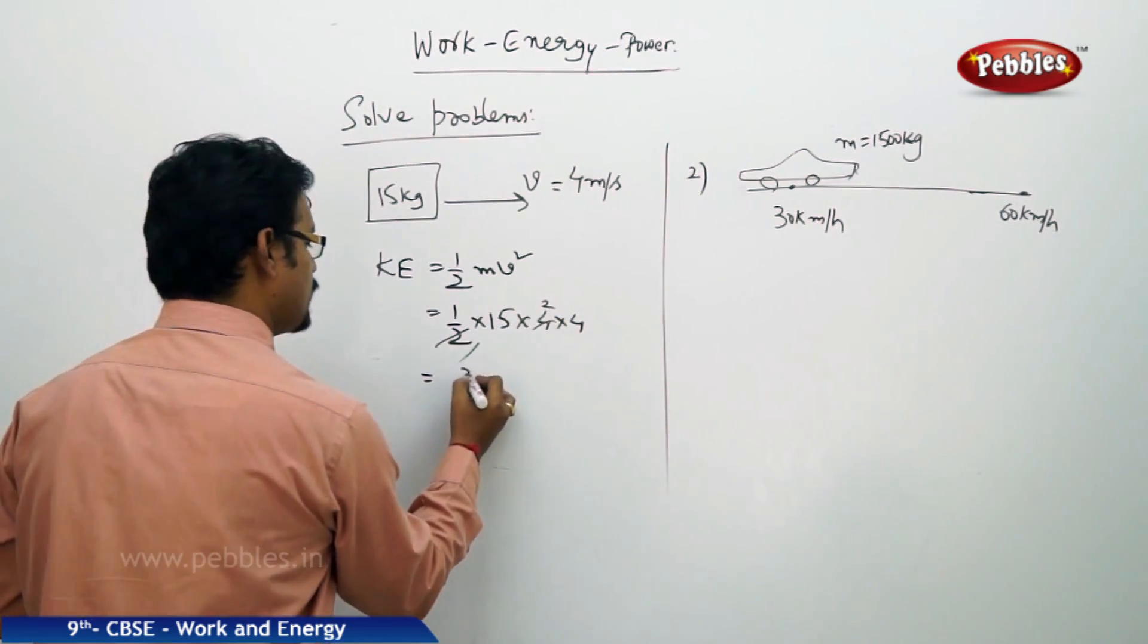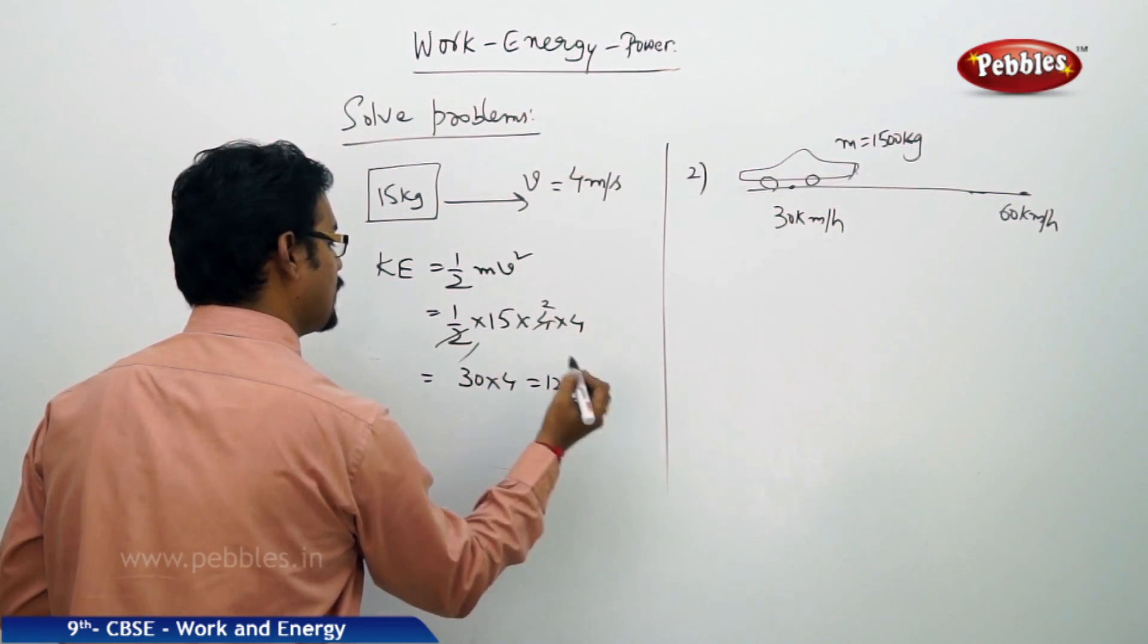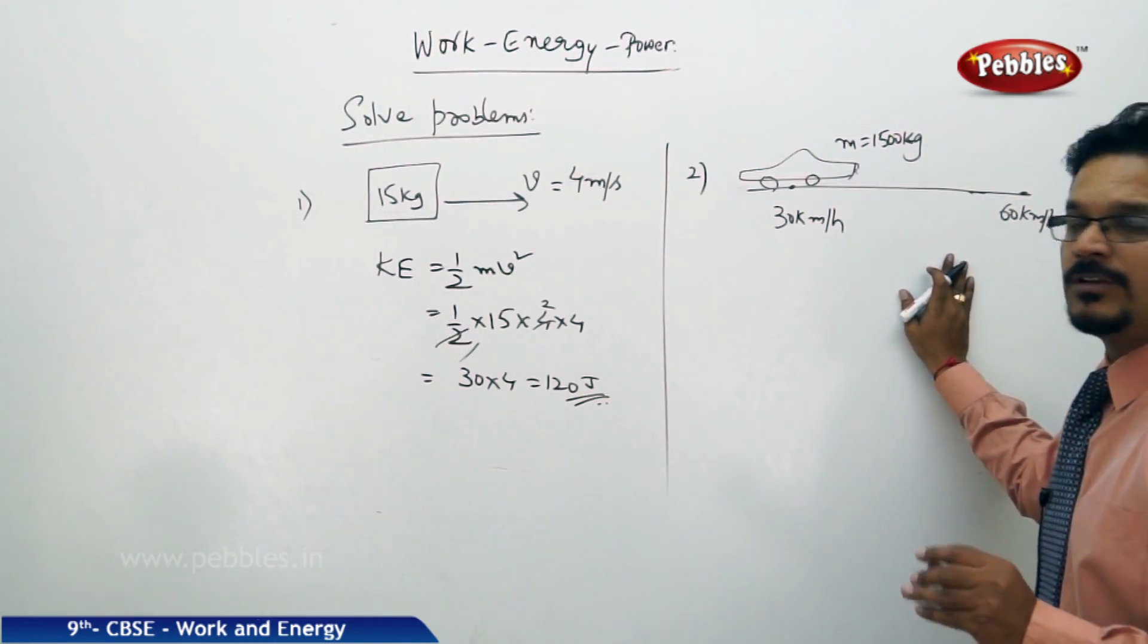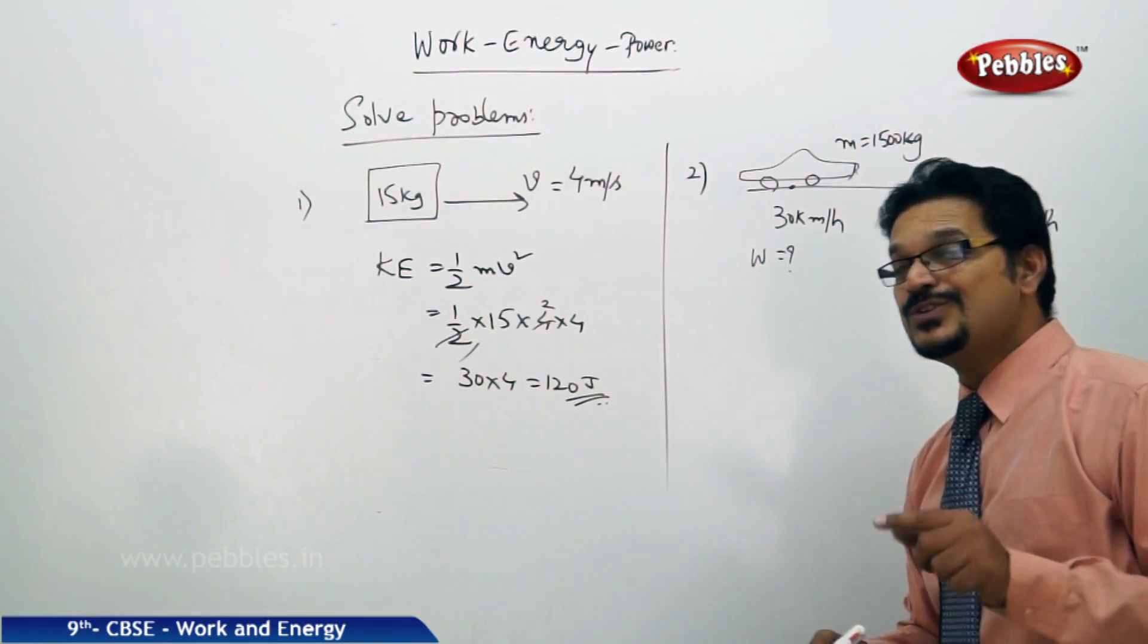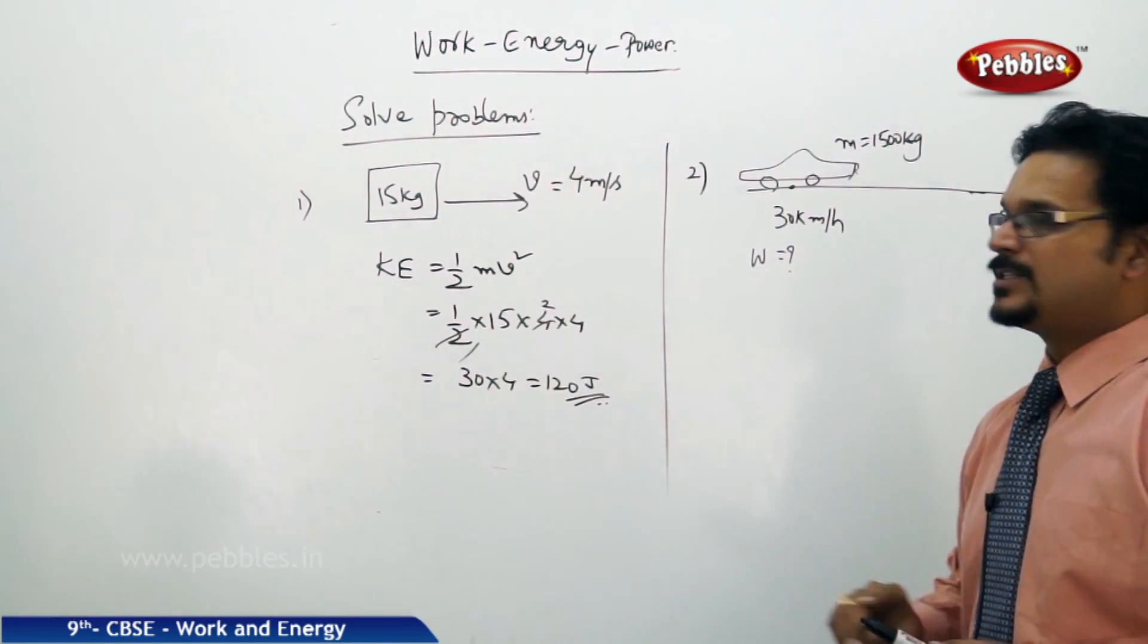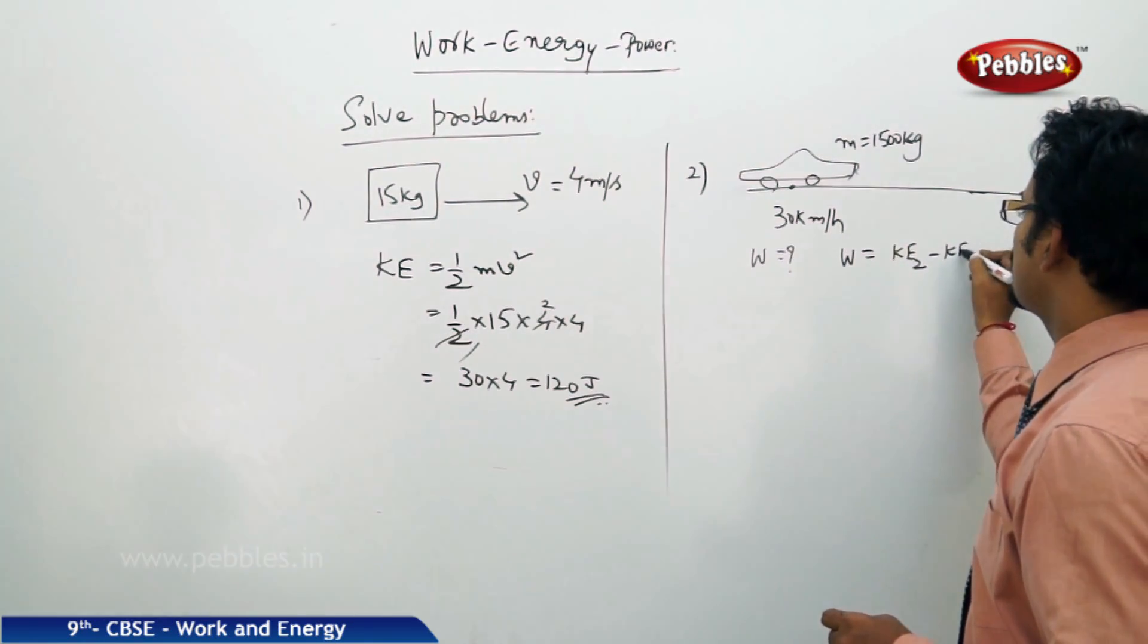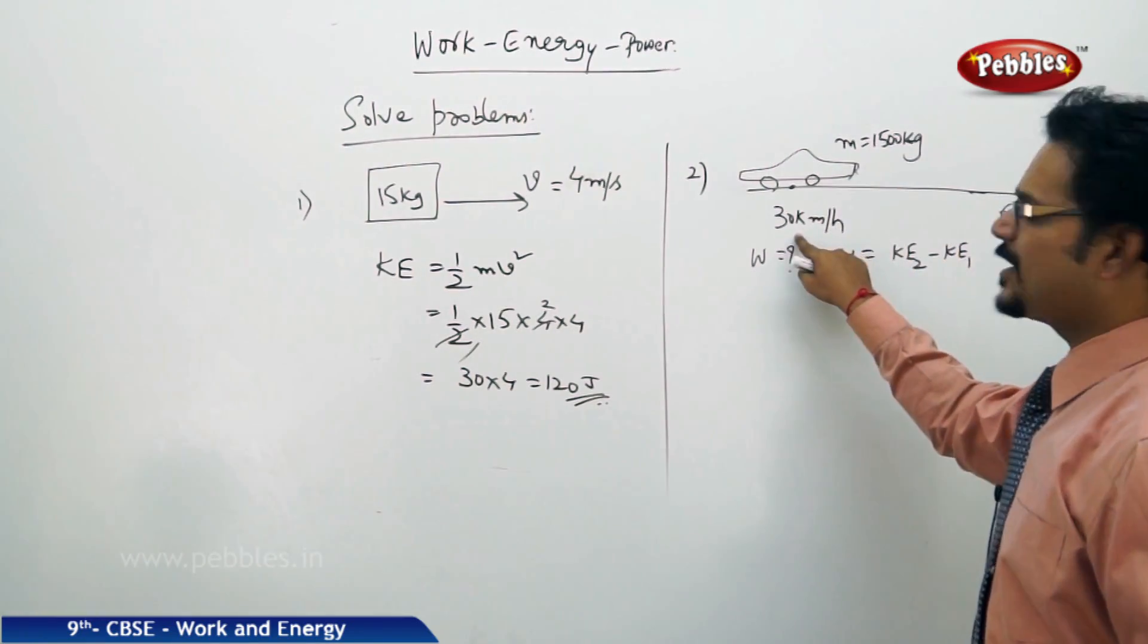The second one: there is a car, it increases speed from 30 kmph to 60 kmph. Now you need to calculate the amount of work done. Work done is force into displacement but displacement and force are not given. Still, how do you find work done? Yes, just earlier I have told you that amount of work done is the change in kinetic energy, KE2 minus KE1, final minus initial.